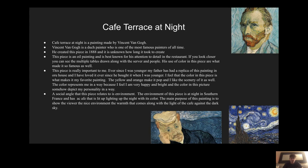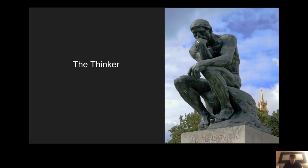A social angle this piece relates to is environment. The environment is the setting at night in southern France — there's a cafe, it's lit up, and the lighting at night lights up the scene with color. The main purpose of this painting is to show the viewer the nice environment and the warmth within it.